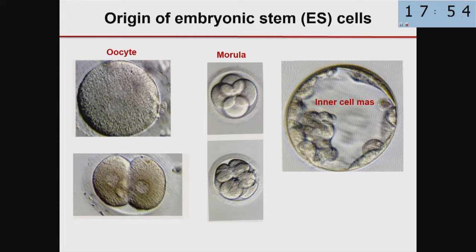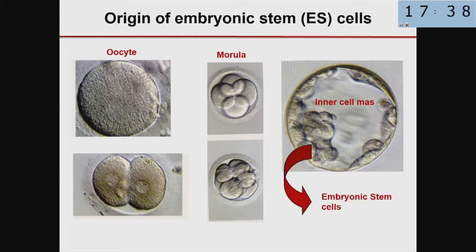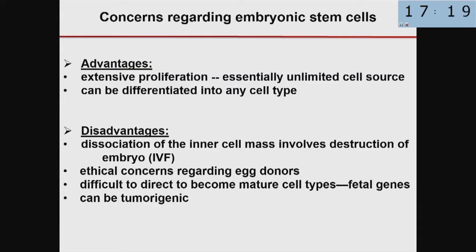Stem cells really began with embryonic stem cells. The oocyte is fertilized, it divides, and you get to a blastula stage where there's an inner cell mass. If you isolate those cells and put them in culture, you have embryonic stem cells, and those stem cells can be directed to differentiate into any cell type of your body — skeletal muscle, a cardiomyocyte, skin cells. The advantages are that they extensively divide and provide an almost unlimited cell source, and can be differentiated in theory into almost any cell type.